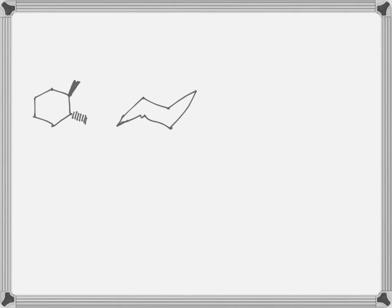Here I have drawn a chair conformer and I put my two substituents on. Notice I have one and two on the planar structure and those go with the positions of the methyls on the chair structure.